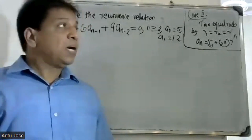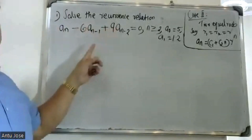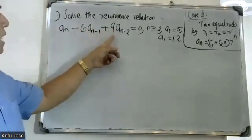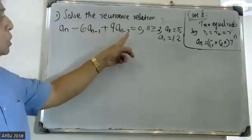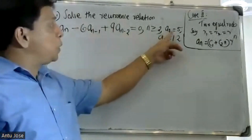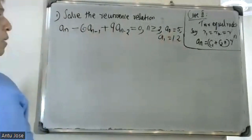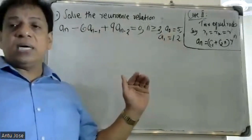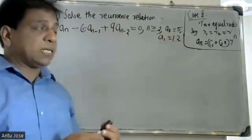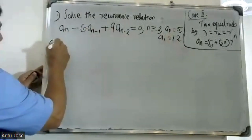Good morning students. The question: solve the recurrence relation a(n) - 6·a(n-1) + 9·a(n-2) = 0, where n is greater than or equal to 2, with initial conditions a(0) = 5 and a(1) = 2. This is a second-order homogeneous recurrence relation.